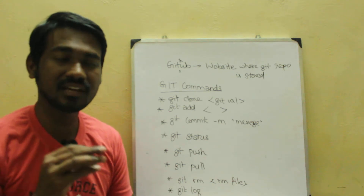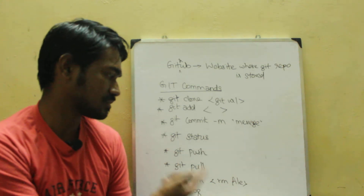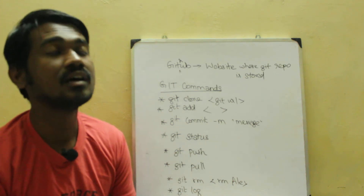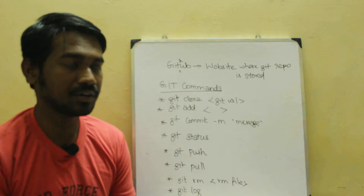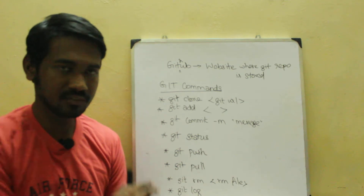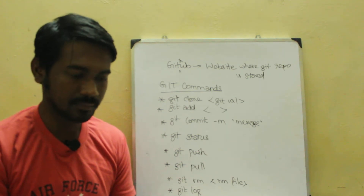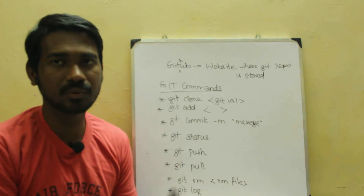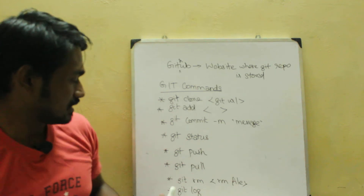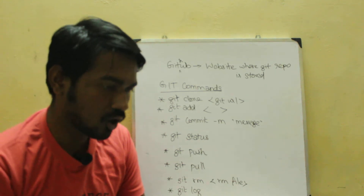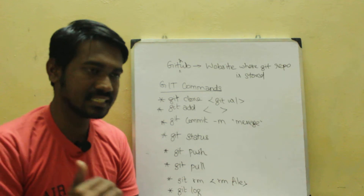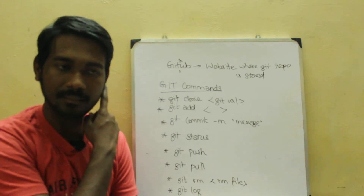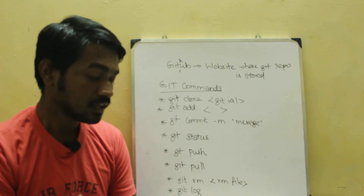Git rm is used to remove a file, and you commit after removing. You can also roll back and reverse changes. Git log displays different commits and shows changes that have been made.